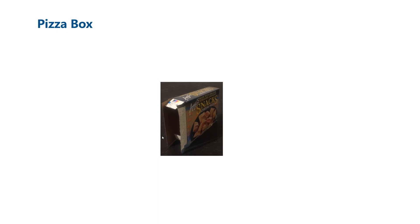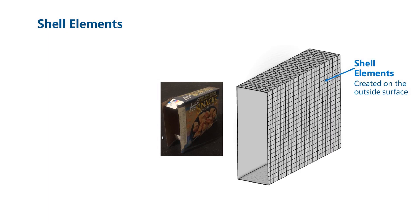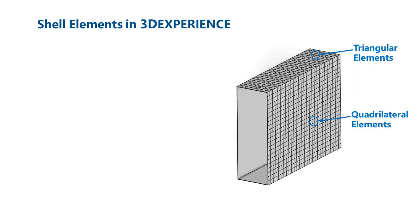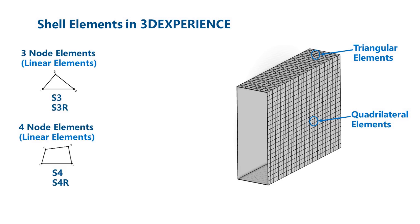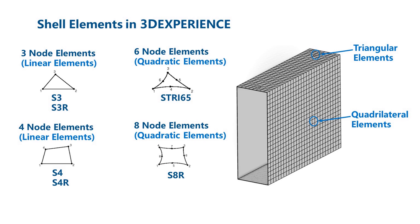The second item we will examine is a cardboard pizza box. This box has very thin walls when compared with its other dimensions. It would be very inefficient to model this box using solid elements. Fortunately, we can mesh the outside face of the box with three-dimensional shell elements. 3D experience has both quadrilateral and triangular shell elements. Elements with three or four nodes are linear shell elements, and elements with six or eight nodes are quadratic shell elements. Like the tetrahedral elements, some shell elements have limitations which can significantly impact accuracy. If you are new to structural simulation, the best approach would be to use either S4 or S4R elements. It is okay to have S3 or S3R elements mixed in, but try to create a good quality mesh with four-node quadrilateral elements.